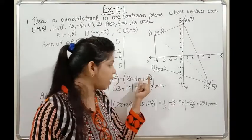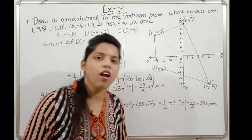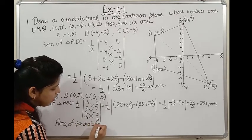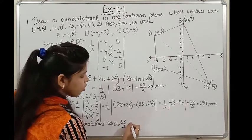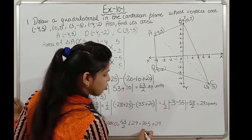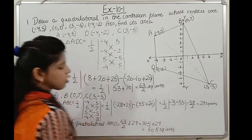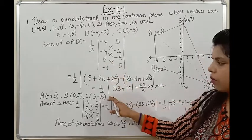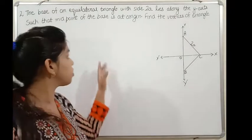Both triangles are done: ADC = 63/2 and ABC = 29. Area of quadrilateral ABCD = 63/2 + 29 = 31.5 + 29 = 60.5 square units. This is our final answer. We divided the quadrilateral into two triangles, found each area, and added them together.